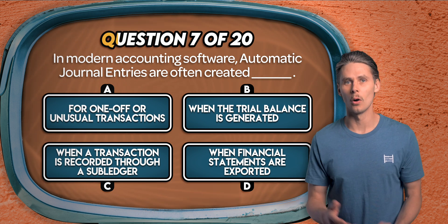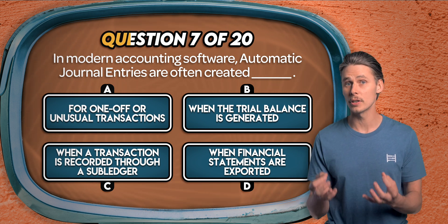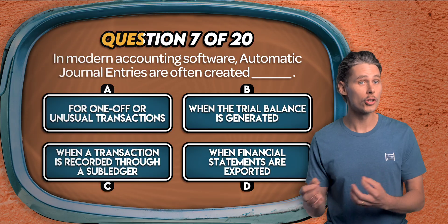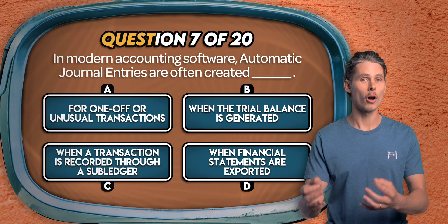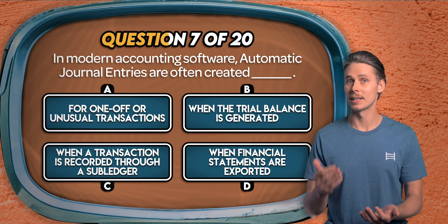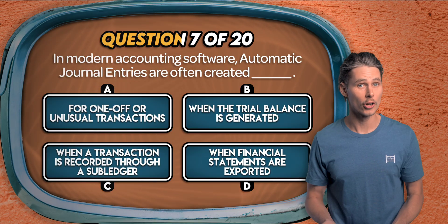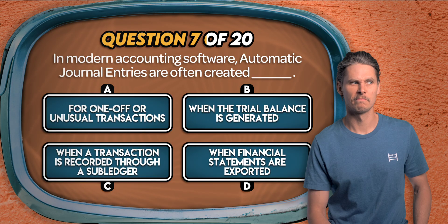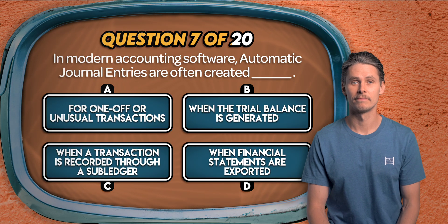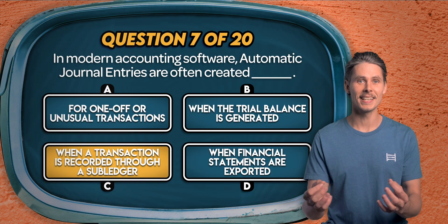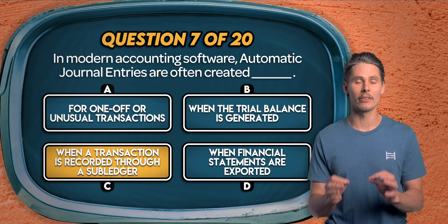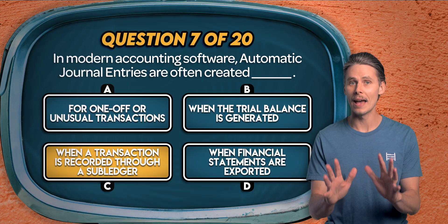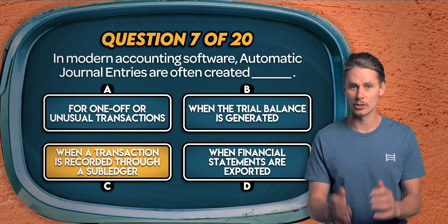Question 7. In modern accounting software, automatic journal entries are often created for: one-off or unusual transactions, when the trial balance is generated, when a transaction is recorded through a subledger, or when financial statements are exported? It's C. Automatic journal entries are generated by an accounting system whenever a transaction flows through a subledger.